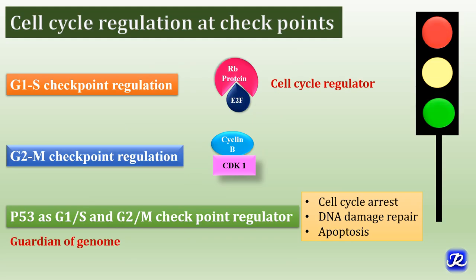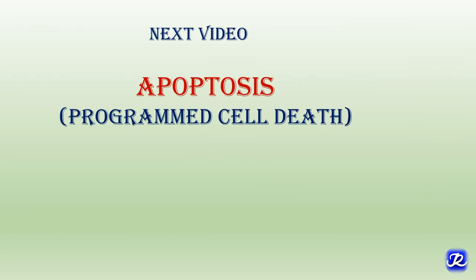To summarize: the cell cycle is regulated at two important checkpoints — G1/S and G2/M. The G1/S checkpoint is regulated by retinoblastoma protein, also called the cell cycle regulator. The G2/M checkpoint is regulated by the cyclin B CDK1 complex. P53 also regulates cell cycle at both G1/S and G2/M checkpoints by arresting the cell cycle, repairing DNA damage, and causing apoptosis. It maintains genomic stability, which is why it is rightly called the guardian of the genome. The next video will be on apoptosis, covering important aspects for understanding the molecular mechanism of carcinogenesis.